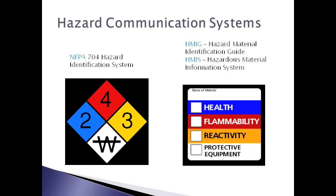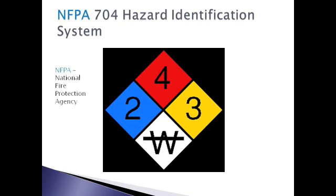Now let's take a look at the different labeling systems. On the left you can see a sample of the NFPA hazard diamond — this is one system. Two other HCS compliant systems are the Hazardous Material Identification Guide, also known as HMIG, and the Hazardous Material Information System, HMIS. You can see samples of what they look like on the right side of the picture. The first system I would like to review is the NFPA hazard diamond, which is the system we use in the Milwaukee Area Technical College Dental Hygiene Lab, because it is easily recognized by the fire department and other professionals.